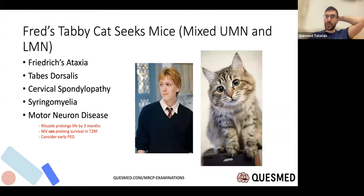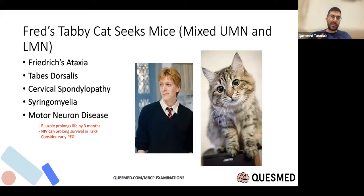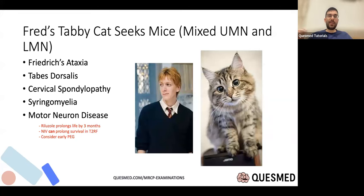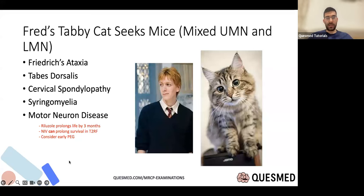A useful mnemonic for mixed upper and lower motor neuron signs: 'Fred's tabby cat seeks mice' — Friedreich's ataxia, tabes dorsalis, cervical spondylopathy, syringomyelia, and motor neuron disease. For motor neuron disease, the key facts are: riluzole is the only real treatment; NIV for type 2 respiratory failure can prolong survival; and early PEG should be considered before bulbar function is lost. This eventually becomes a question of palliative care and ongoing follow-up.